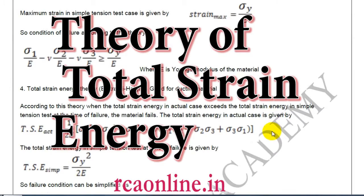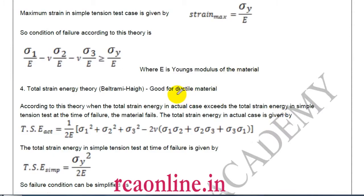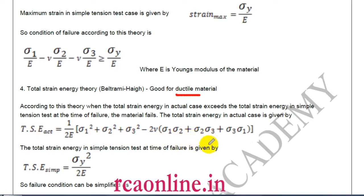The fourth theory is Total Strain Energy theory, again more applicable for ductile material. The total strain energy for stresses sigma one, sigma two, sigma three is: (1/2E) × [sigma one² + sigma two² + sigma three² − 2mu(sigma one·sigma two + sigma two·sigma three + sigma three·sigma one)]. This is a standard result to remember.